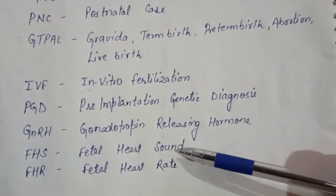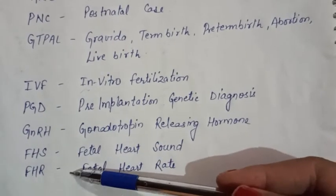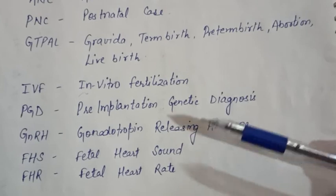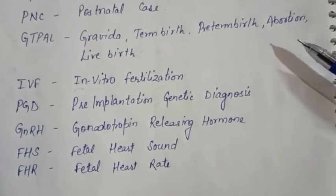FHS is fetal heart sound. And FHR is fetal heart rate. So these are the common abbreviations in obstetrics.